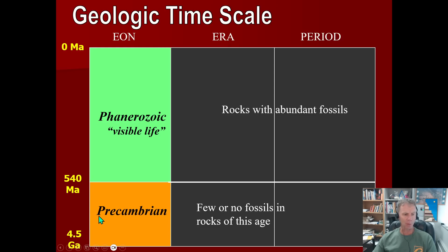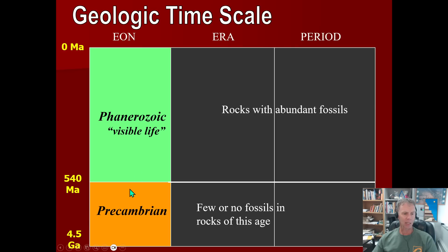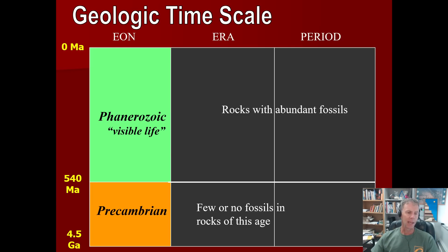The Precambrian — even though on my graph the green box looks a lot larger than the orange — look at the numbers. This is actually 4 billion years of Earth's history. That's 88% of Earth's history in the Precambrian. We actually don't know as much about the Precambrian as we do about later time periods because we have mostly igneous and metamorphic rocks. Remember the rock cycle — rocks get melted, metamorphosed, changed, buried. We have much more information about the more recent Phanerozoic, which is the eon we'll subdivide into eras and periods.